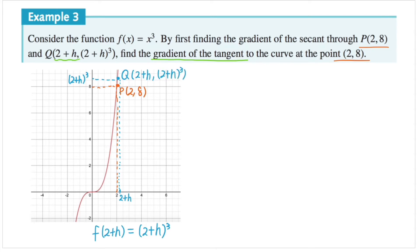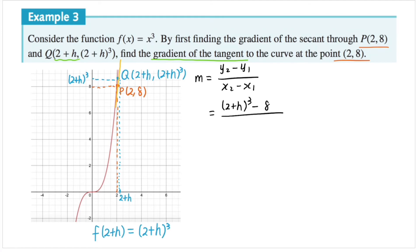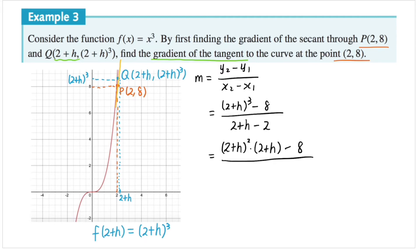Now find the gradient of the tangent to the curve — that is, if we draw a straight line through these two points, what is its gradient? Let the gradient be m. Using m = (y2 - y1)/(x2 - x1): y2 is (2 + h)³, y1 is 8, x2 is 2 + h, and x1 is 2. I can split (2 + h)³ into (2 + h)² times (2 + h), minus 8, all over — noting that 2 minus 2 cancels, leaving h in the denominator.